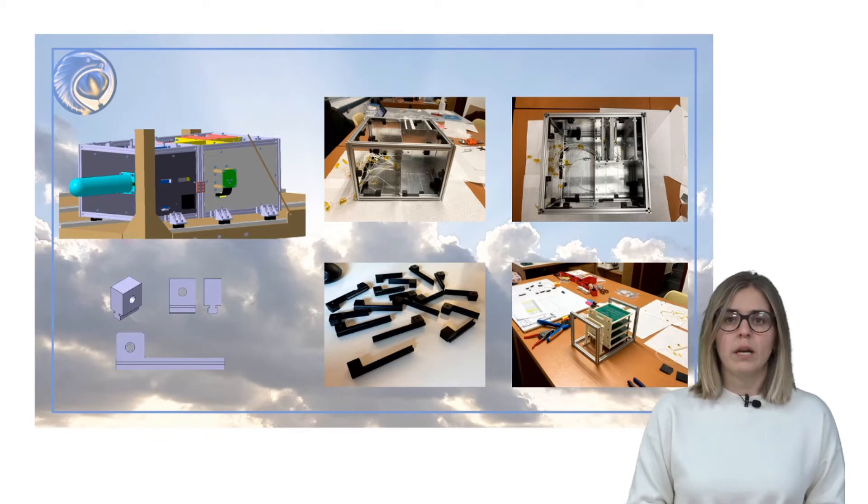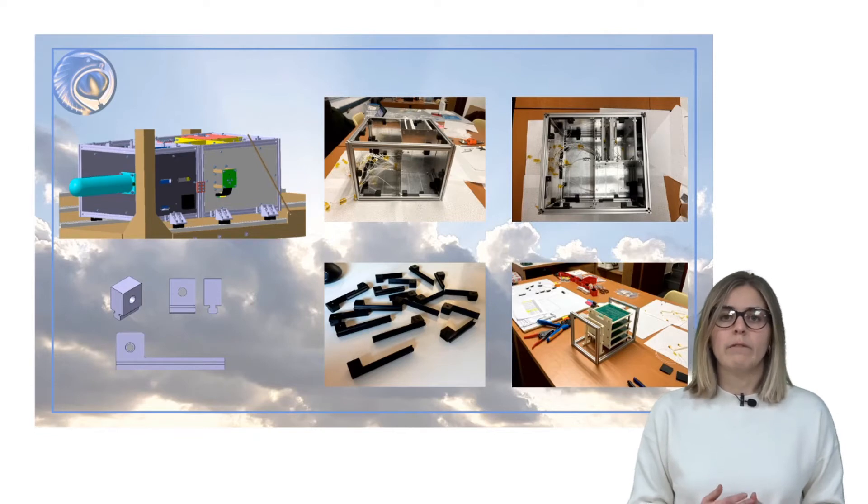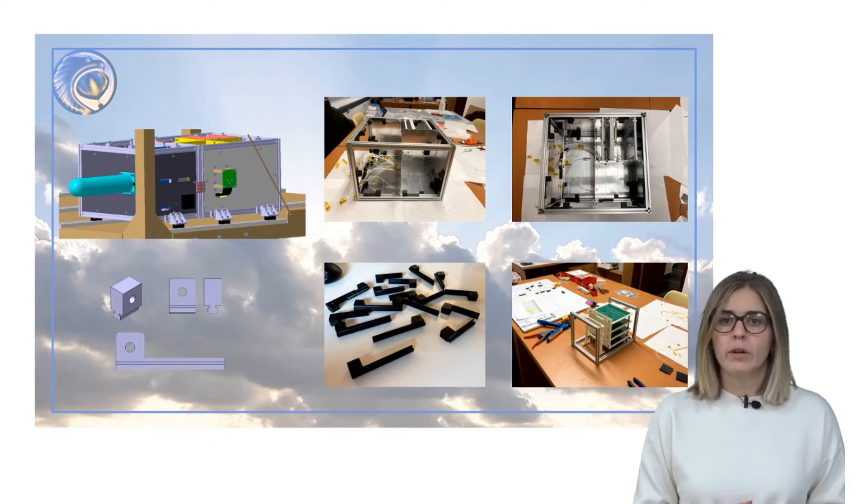For faster prototyping and sufficient mechanical properties, the panel mounts are printed in ABS+. An embedded nut will then be placed on the panel mount so the panel can be screwed into the mount and fixed to the structure. Several types of panel mounts are designed so they could better fit the structure and for easier panel mounting.